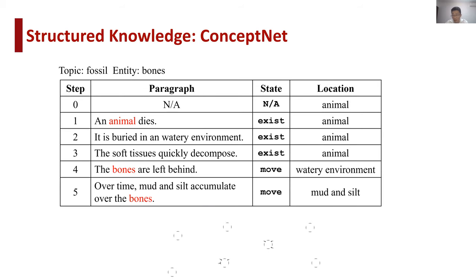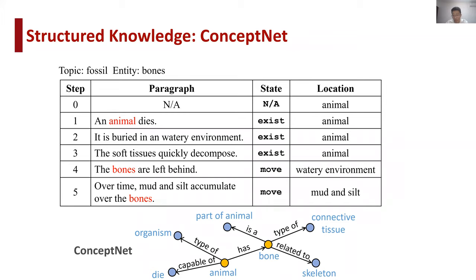ConceptNet is a relational knowledge base composed of concepts and relations. Such structure makes ConceptNet naturally suitable for entity-centric tasks like procedural text understanding. An entity in our task can be matched to a concept-centric subgraph in ConceptNet, including its relations with neighboring concepts. Recall the previous example: although it is hard to directly infer the initial location of bones, we can find triples—animal has a bone, and bone is a part of animal—from the ConceptNet knowledge graph. These knowledge triples can serve as evidence for predicting entity states and locations that are not explicitly mentioned.